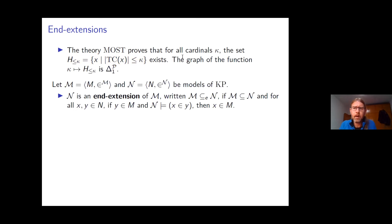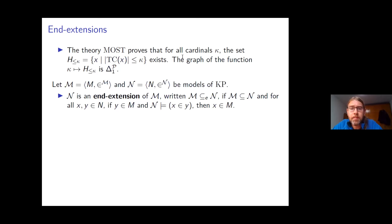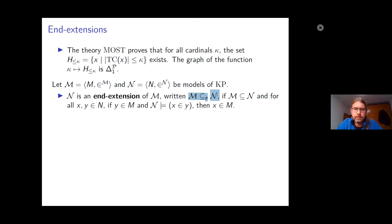Today I want to discuss end extensions of models of set theory. There are several different notions. Suppose M and N are structures in the language of set theory, both models of KP at least. We say N is an end extension of M if M is a substructure of N and in going from M to N, no new members of any point in M are added — in other words, M is a transitive subclass of N. For example, the universe is an end extension of L, or of any ordinal definable structure.